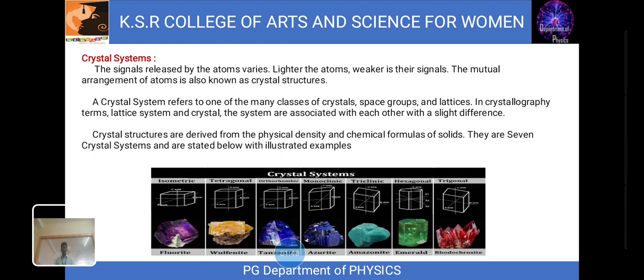The next topic is crystal structures. A crystal structure is made up of atoms. A crystal lattice is made up of points. A crystal system is a set of axes. Crystal structure is obtained by attaching atoms, groups of atoms or molecules. This structure occurs from the intrinsic nature of the constituent particles to produce symmetric patterns.